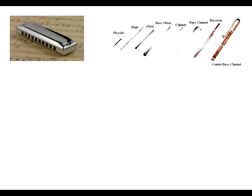Then we have the flute family, which will be your piccolo, your flute, your oboe, bass oboe, clarinet, bass clarinet, and then your bassoon and contrabass clarinet.